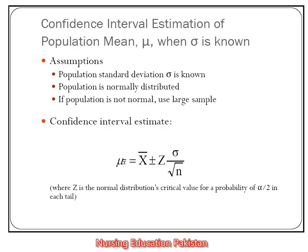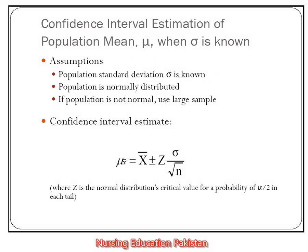We are now discussing the confidence interval for population mean when population standard deviation is known. Confidence interval estimation has some assumptions. These three assumptions are: we have the population standard deviation known, the population is normally distributed, and if the population is not normally distributed, then we need a large sample size. For confidence interval estimation, the formula is x-bar plus minus z-alpha-by-2 multiplied by sigma divided by the square root of n.